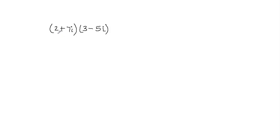First of all, I'm going to multiply 2 with 3, and then I'm going to multiply 2 with negative 5i. So 2 times 3 gives me 6, and 2 times negative 5i gives me negative 10i.